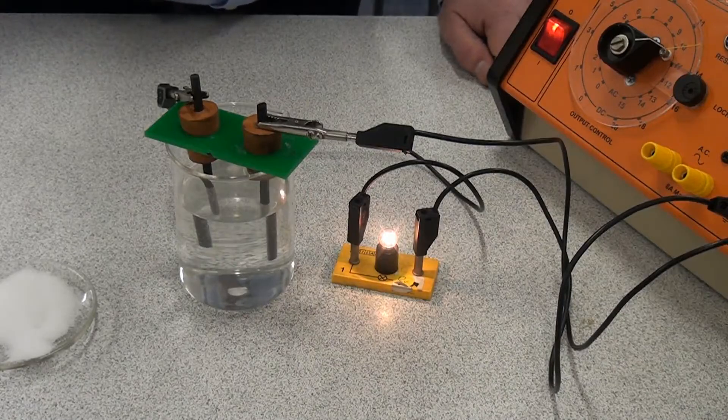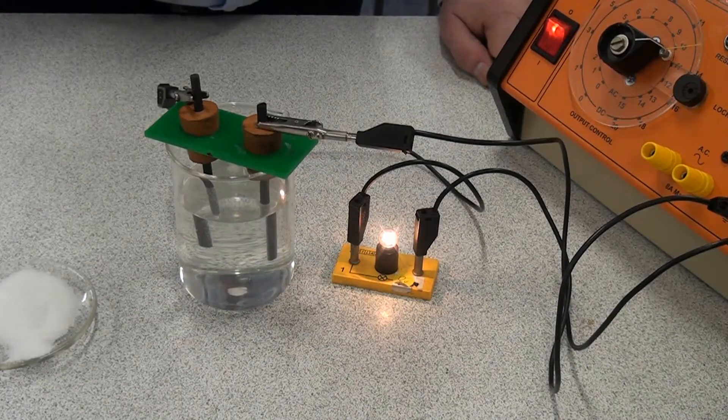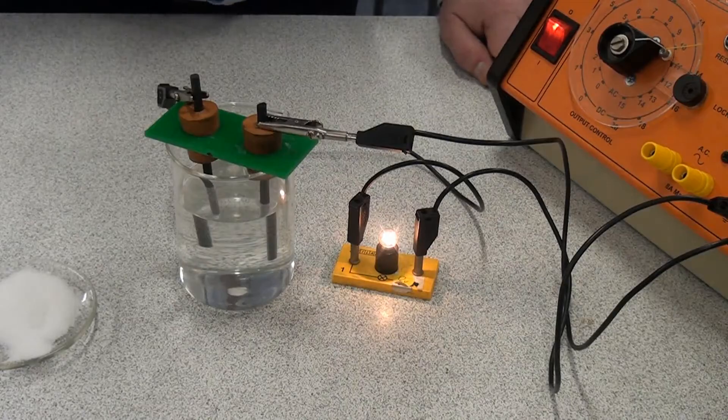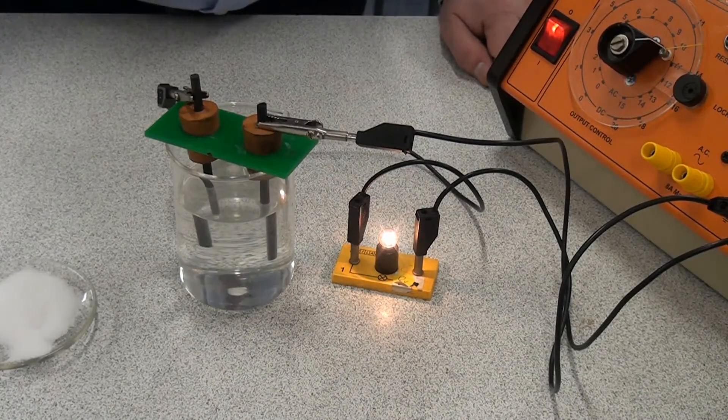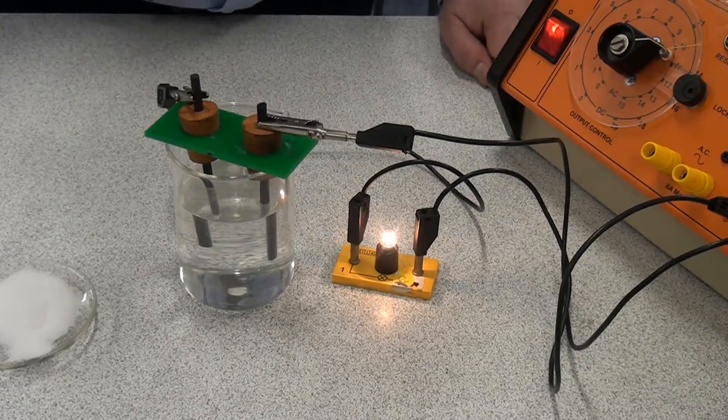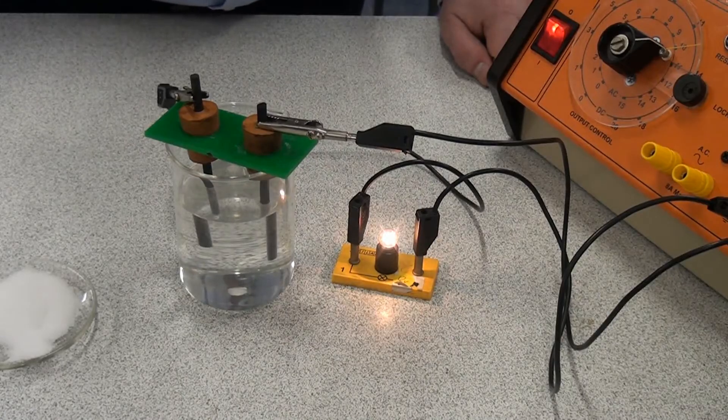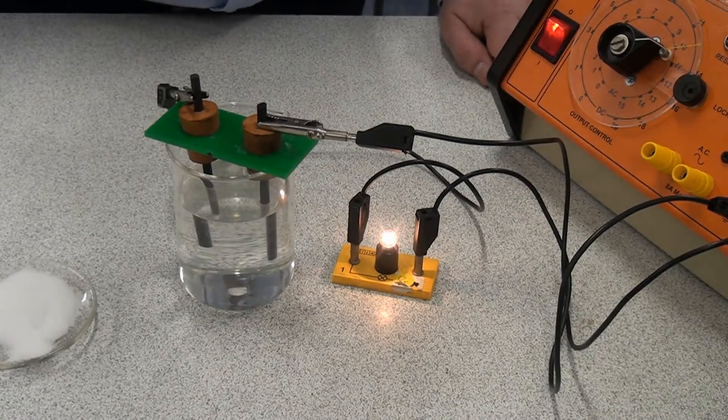So just to recap, ionic compounds can't conduct electricity when solid, but they can when they're in solution. And also, if you make the ionic compound into a liquid by melting it, it will also conduct electricity then as well. Because then, once again, the ions are free to move.